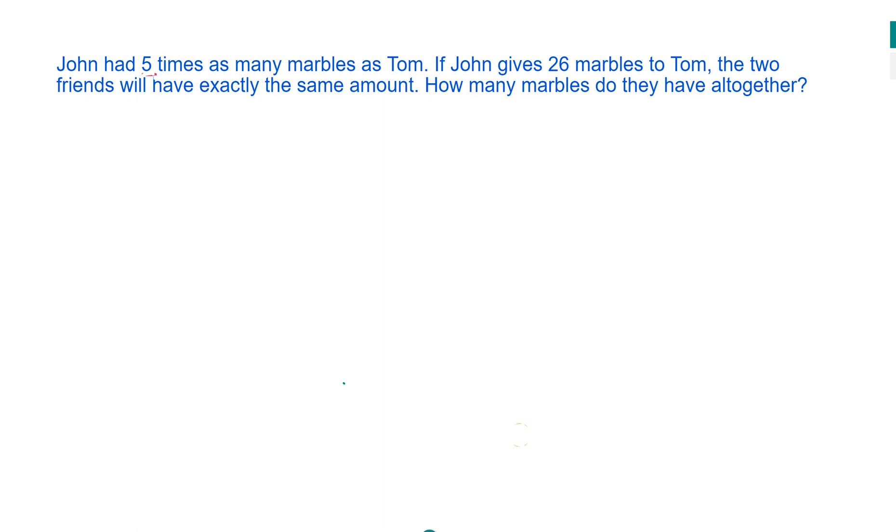We're going to be representing Tom and John's marbles with our counters. So we've got for Tom, this set of marbles. And since John had five times as many marbles as Tom, we have one, two, three, four, five counters for John.